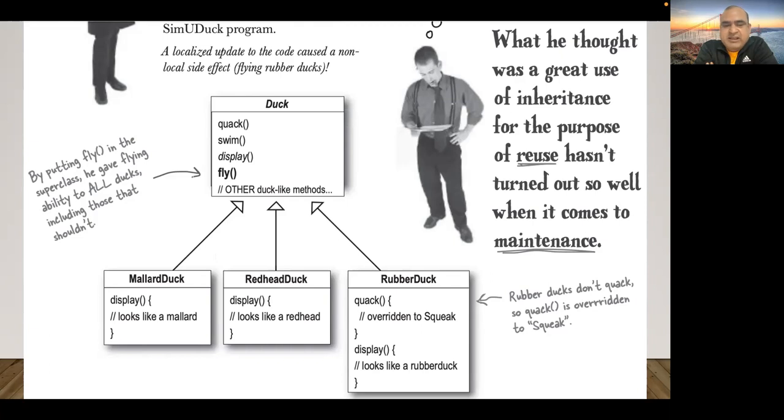For example, a rubber duck cannot fly, a wooden duck cannot fly. Any other kind of ducks which are living can fly, but the capability of flying which is not meant for a kind of duck, that capability also was provided by the superclass in these subclasses. A localized update to the code caused a non-localized side effect—flying rubber ducks. This means the effect was kind of a global effect in whichever classes were inheriting the superclass. This behavior from the parent propagated and was inherited in every child duck class.